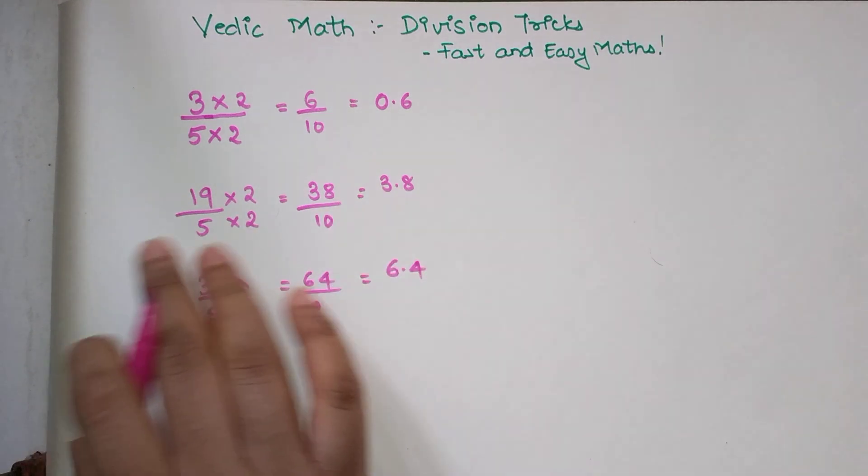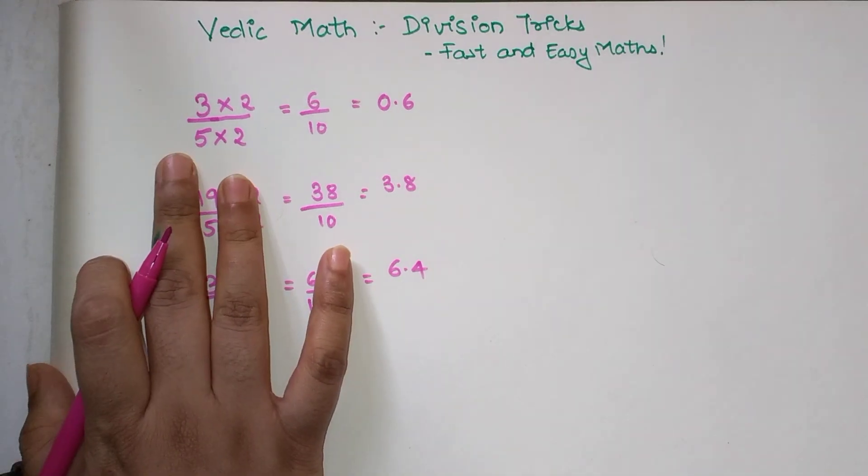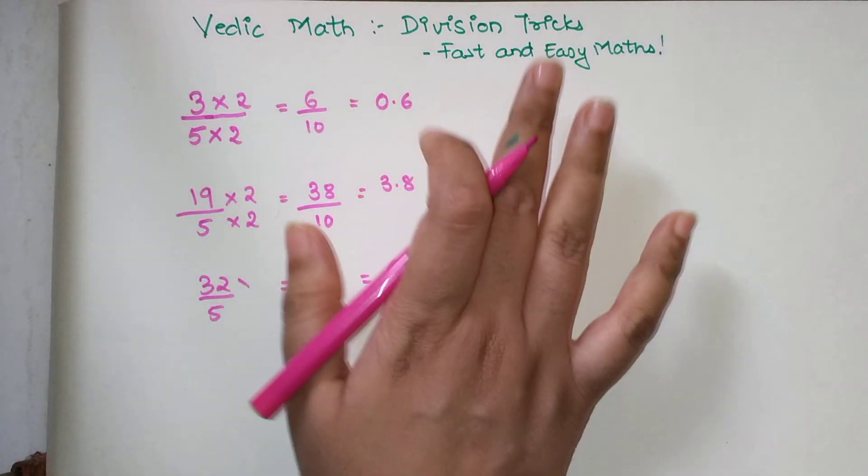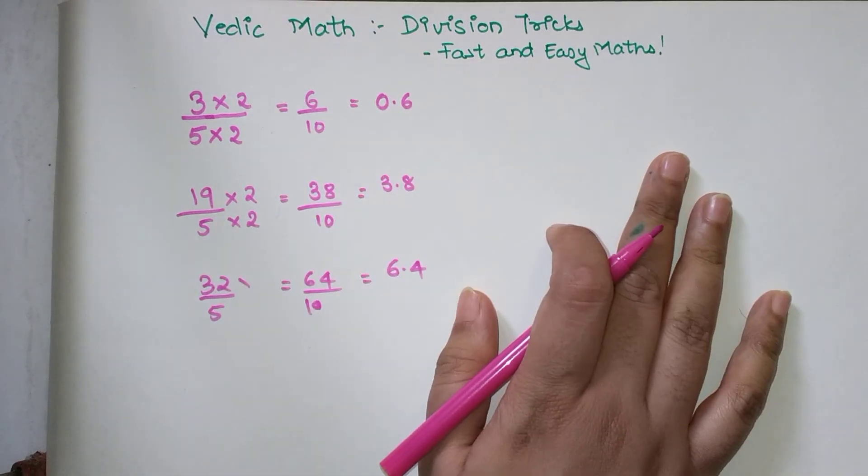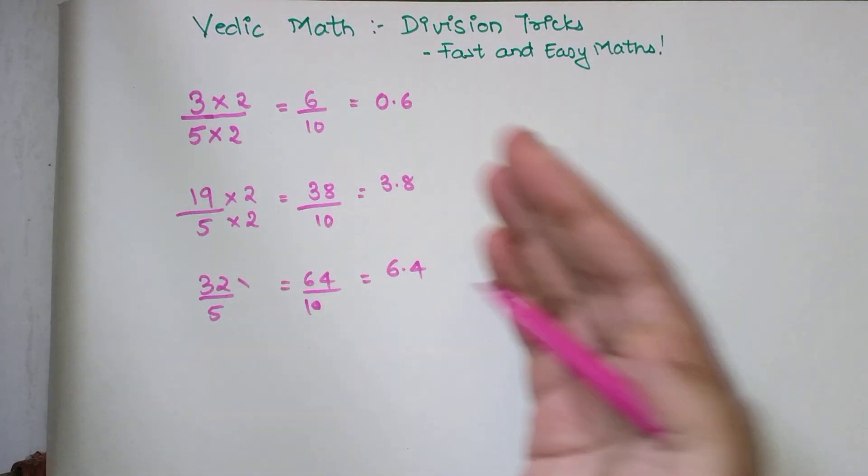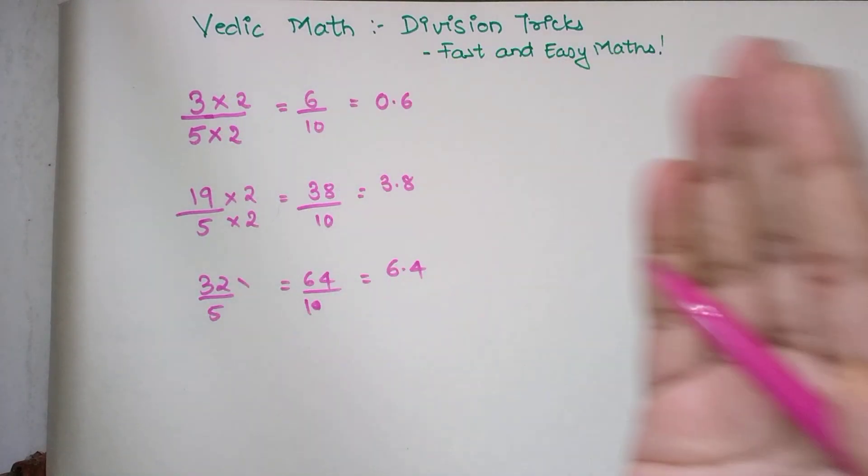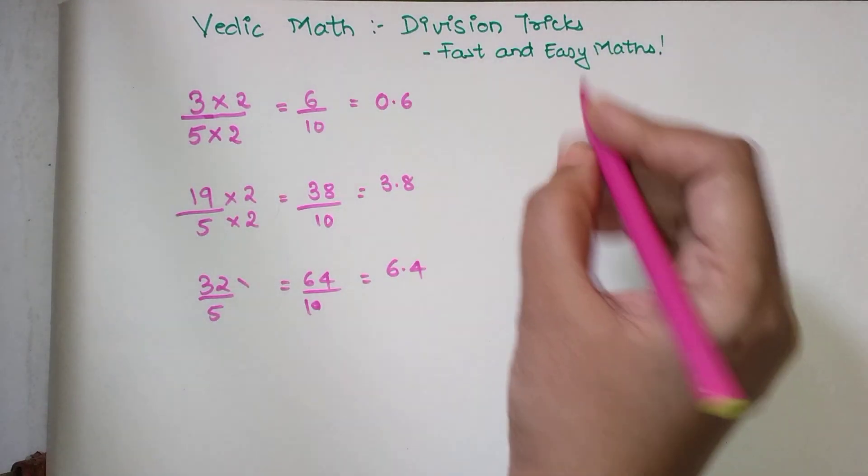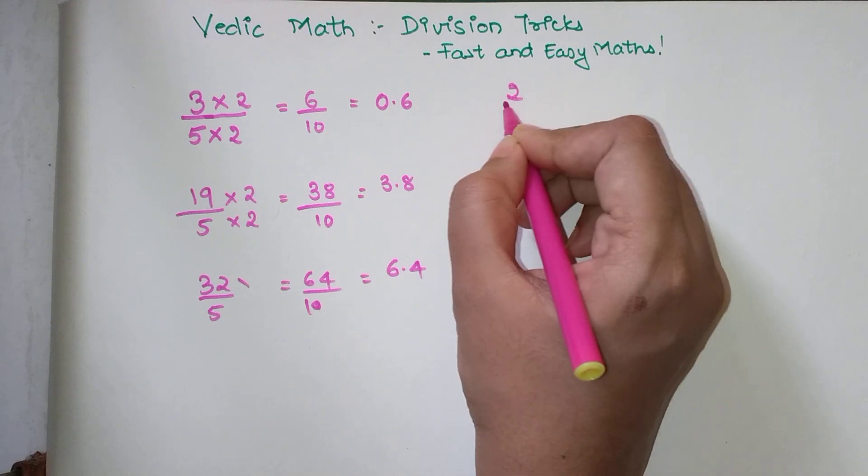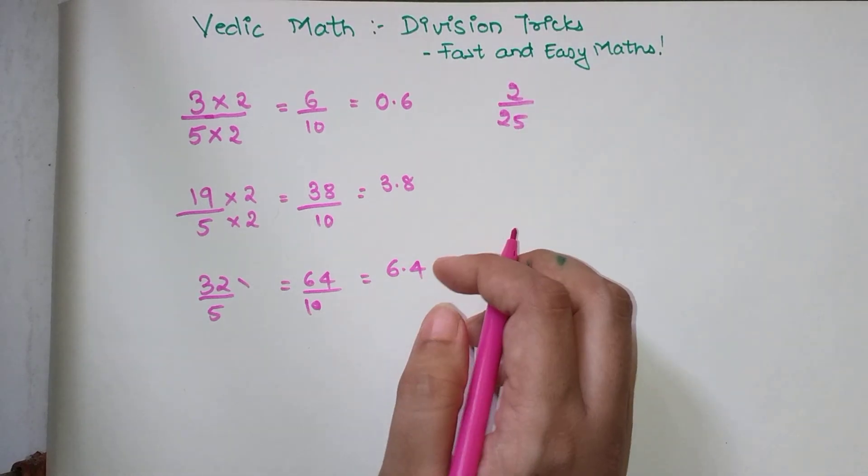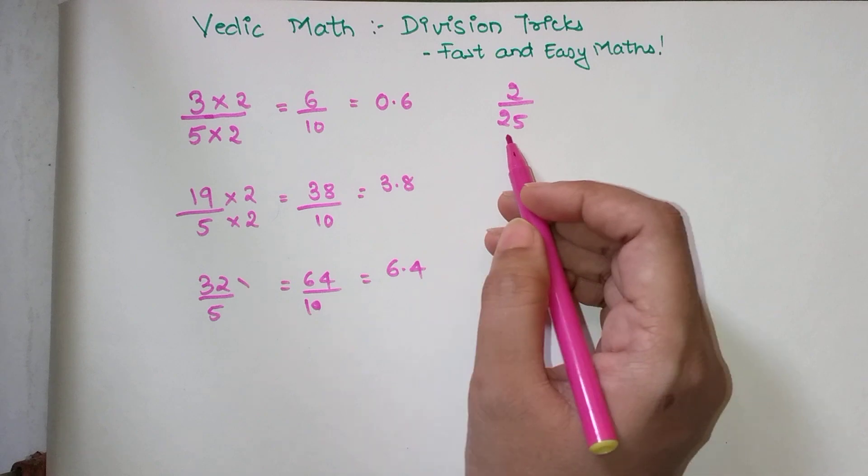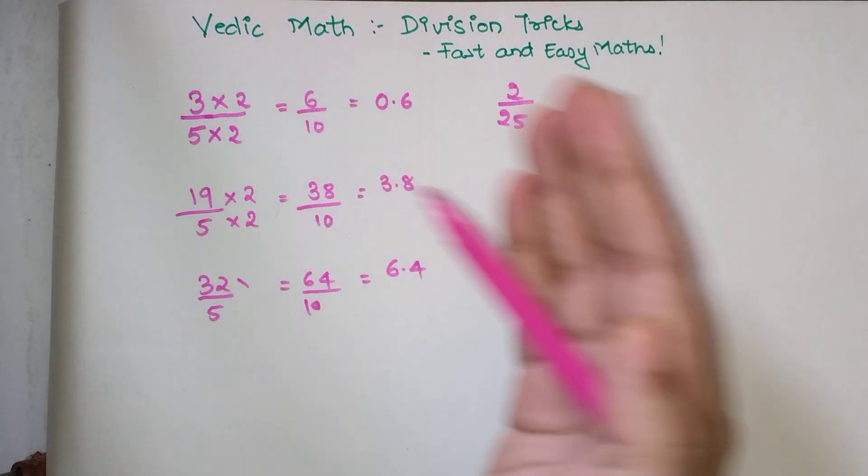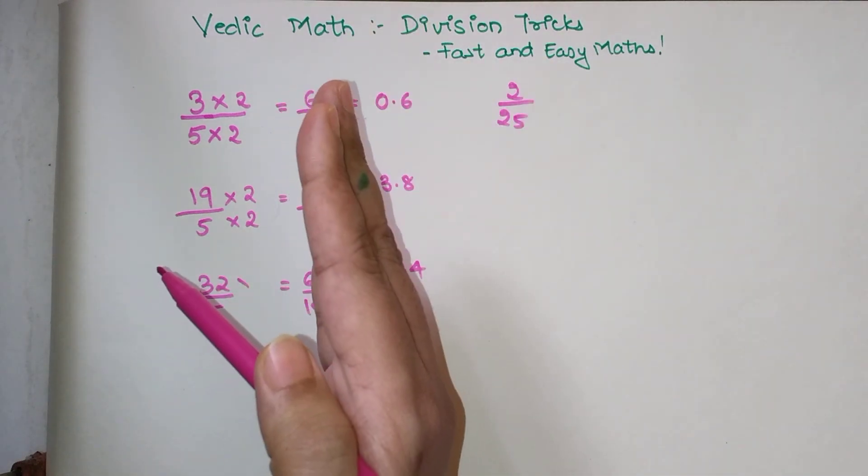You might be thinking I made a video just for division tricks related to 5, but we're going to see this for any number that can be converted in terms of 10, 100, or 1000 when it's in the denominator.